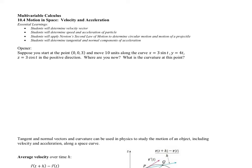Hello, multivariable calculus students. This is Mr. Johnson and we're on section 10.4, which is motion in space. We're going to talk about position, velocity, and acceleration. Much of this is intuitive and we've talked a little bit about this up to this point. For the opener, we're going to look at a quick review problem on changing the vector function in terms of T to be in terms of the arc length.